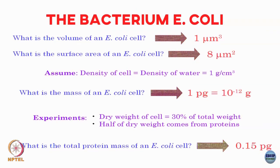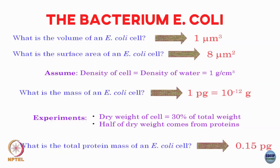So here is one single E. coli cell of 1 micron size, and the mass of the total amount of proteins it contains is around 0.15 picograms. How many proteins is that? To convert from mass to numbers I need to know the typical protein masses.